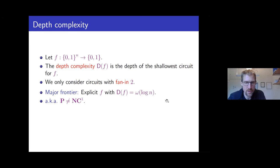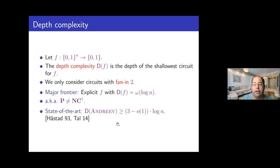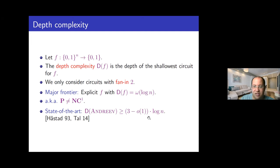To understand the full depressing picture: if you have an n-bit function and you're limiting the fan-in, then logarithmic depth is kind of clear if you need to read the input, and linear size as well. But we cannot go beyond linear size and logarithmic depth. The state of the art says that we can find a function with depth complexity of at least about three times log n. Three is non-trivial, but we would have liked something bigger than a constant.